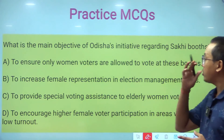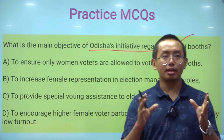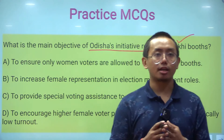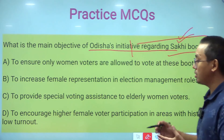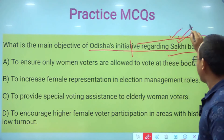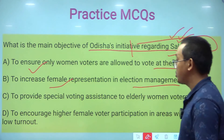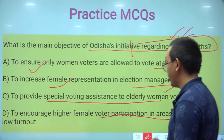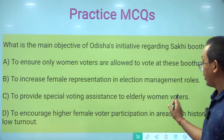The next practice question is: what is the main objective of Odisha's Sakhi Booths initiative? The options are: to ensure only women voters are allowed to vote; to increase female representation in election management roles; to provide special voting assistance to elderly women voters; or to encourage higher female voter participation in areas with historically low turnout. Comment your answer below.